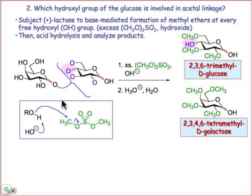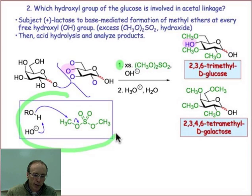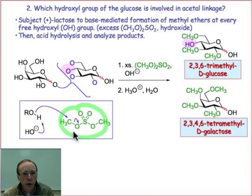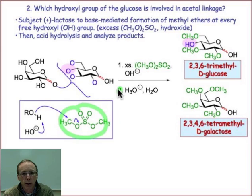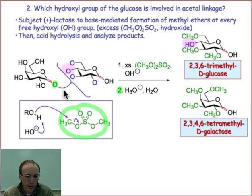The way we're going to determine which position is the linkage between glucose on the right and galactose on the left is with a reaction known as exhaustive methylation — again, a two-step sequence. First, we put a methyl ether at each hydroxyl group. This is an SN2 reaction under basic conditions: we deprotonate those hydroxyl groups making a good nucleophile, then perform an SN2 reaction on dimethyl sulfate, which is a good methylating agent. We then subject that in the second step to hydrolysis, breaking apart the methylated disaccharide into two monosaccharides.